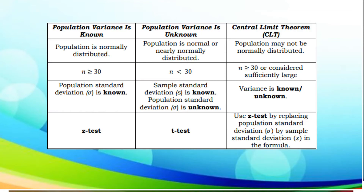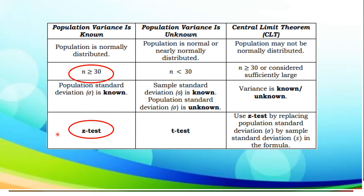Now, let us take this table to clearly deepen our understanding on what kind of test we are going to use given the different parameters. On our first column, you may observe that the population is normally distributed, the sample is greater than or equal to 30, and the population standard deviation is known. Therefore, we are going to use z-test. Remember, if the sample is greater than or equal to 30 and the standard deviation of the population is known, we are going to use z-test.